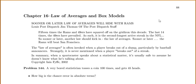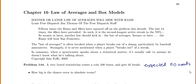For problem 144, a very bored statistician tosses a coin 100 times and they get 45 heads. If they were to toss the coin 100 times we would have expected half heads — so out of 100 times we would expect 50 heads. We expected 50 heads but we got 45 heads. When we talk about chance error, we mean how far off is what we actually got compared to what we expected. So we were off by 5 heads.